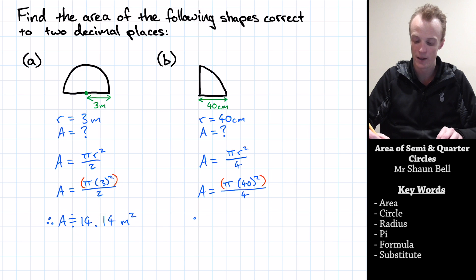So when I enter this into my calculator, I therefore find that the area of this quarter of a circle is approximately equal to 1,256.64 centimetres square.